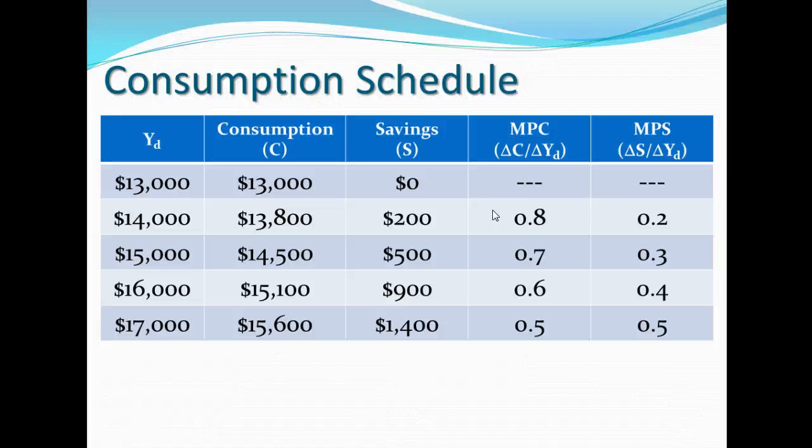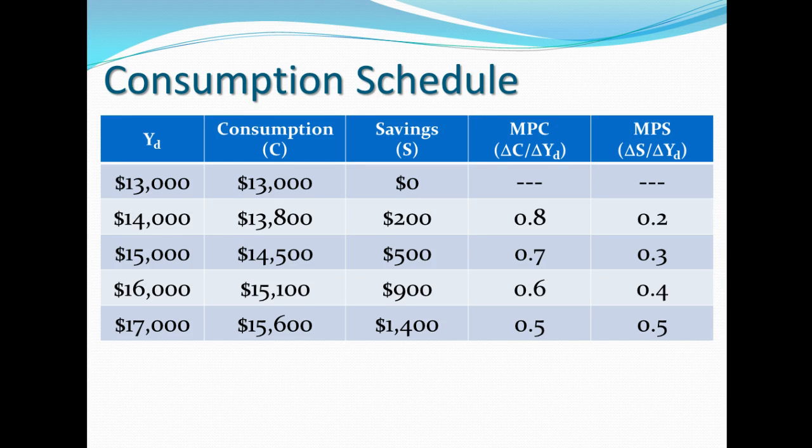These are the formulas: it's the change in consumption over the change in income for MPC, or if it's the marginal propensity to save, it's the change in savings over the change in income.